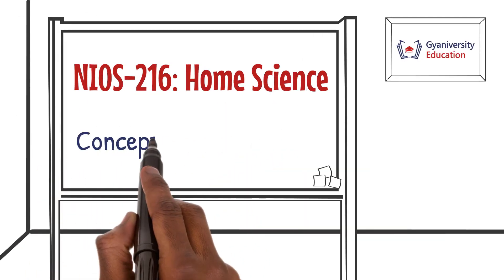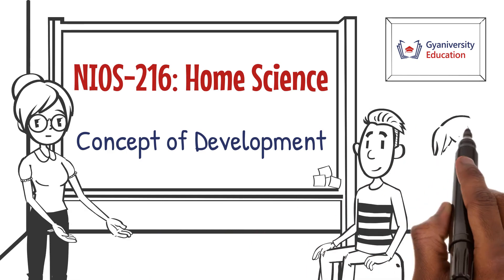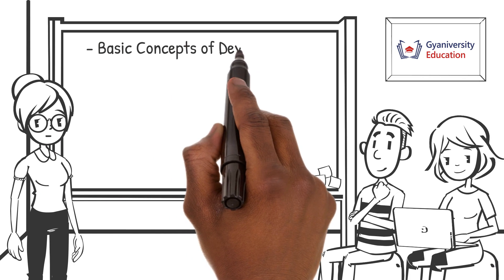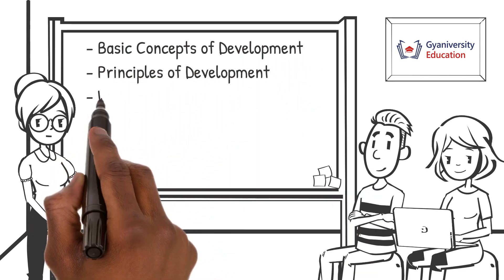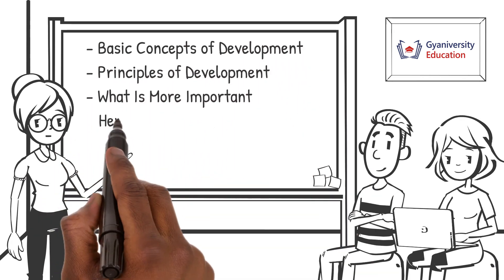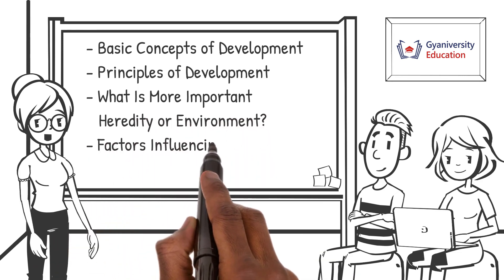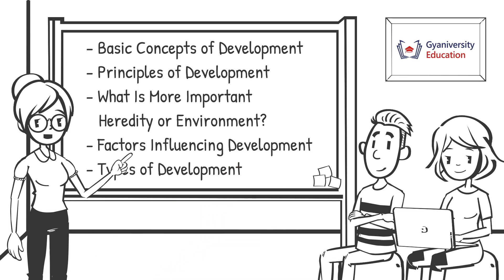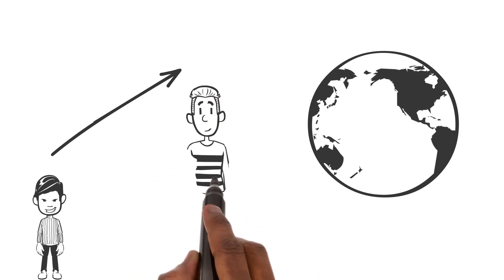Welcome to the home science lesson on the concept of development. In this lesson you will learn about basic concepts of development, principles of development, what is more important — heredity or environment — factors influencing development, and the types of development. Let's begin. In the world of home science, development doesn't just mean growing taller.